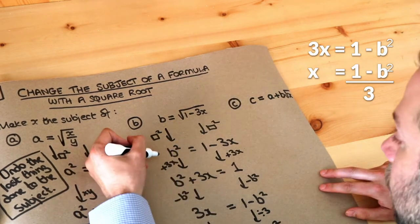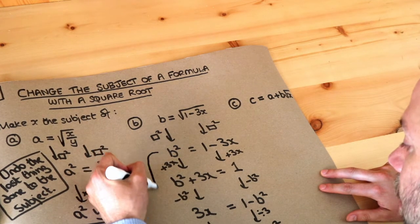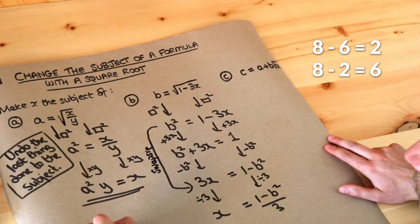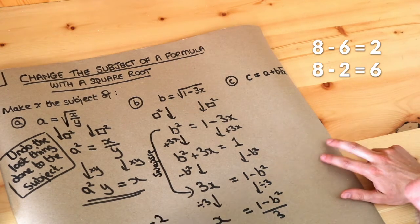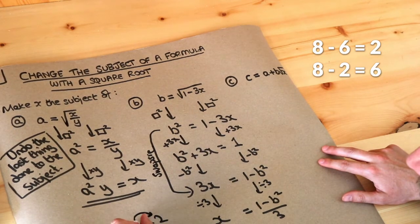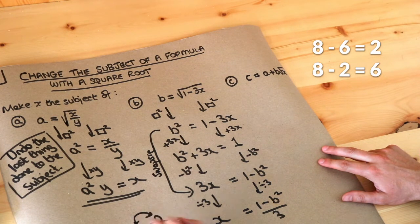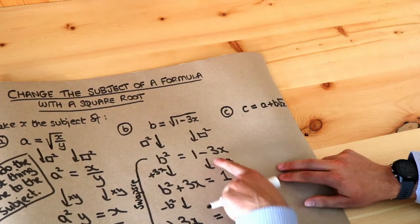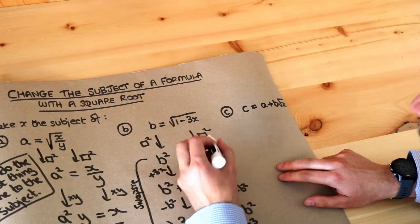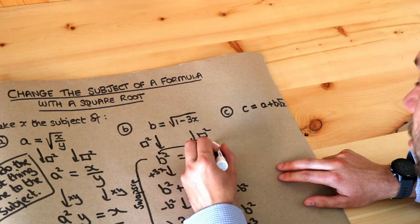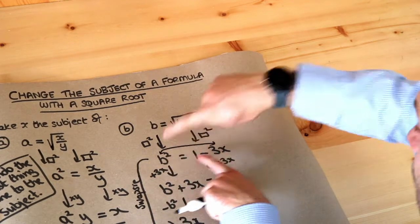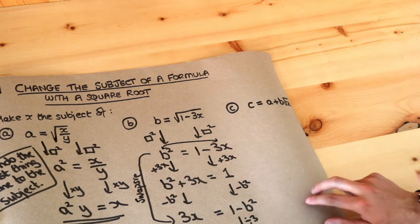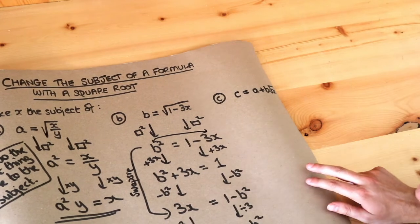I tend to go from the step with b squared equals one minus three x to three x equals one minus b squared in one go. I call this the swapsy trick. If eight minus six equals two, you can swap the six and the two — eight minus two equals six is also true. So you can swap the thing you're subtracting and the result on the other side of the equation. Similarly here, we swap the three x and the b squared, giving three x equals one minus b squared directly.